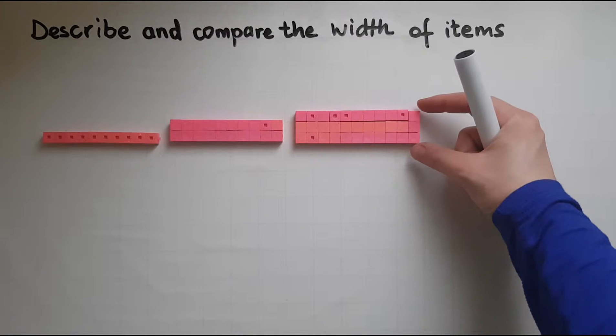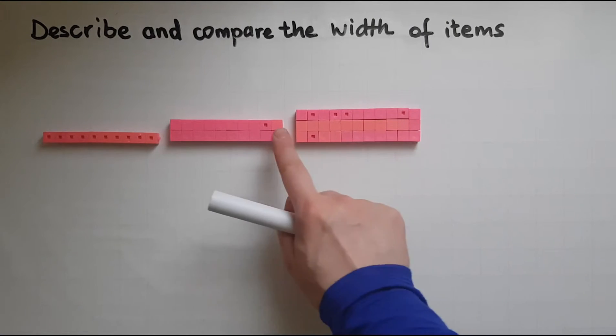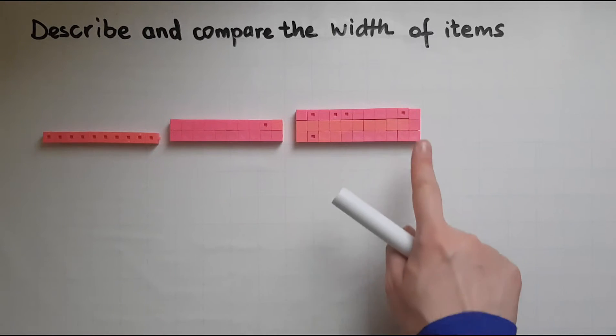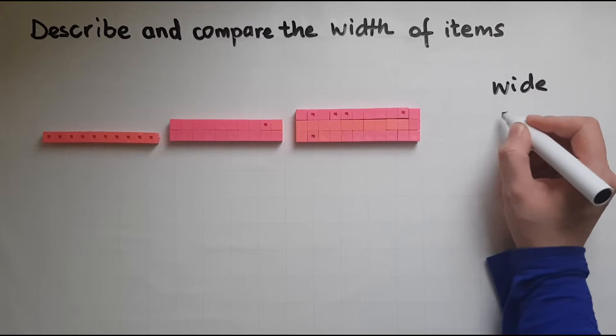So here is the width of this block, and you can see them being different between each of the items, between each of the blocks of cubes. So the two key words here are wide and narrow.